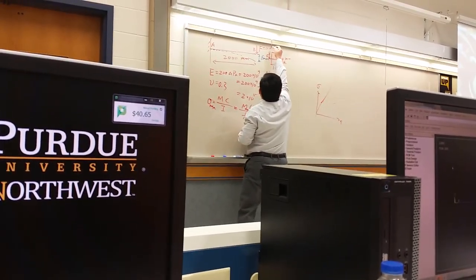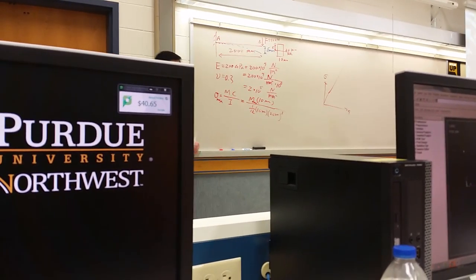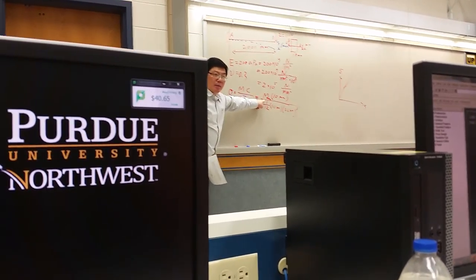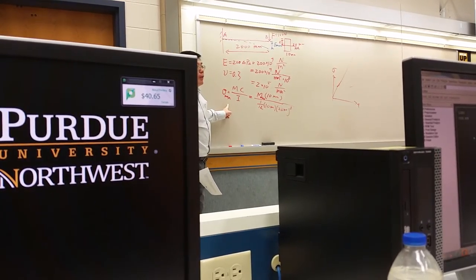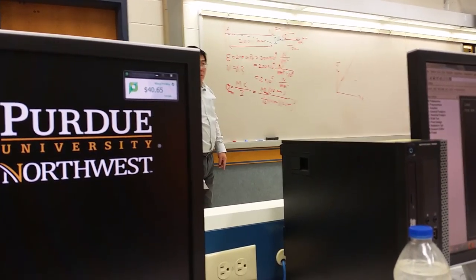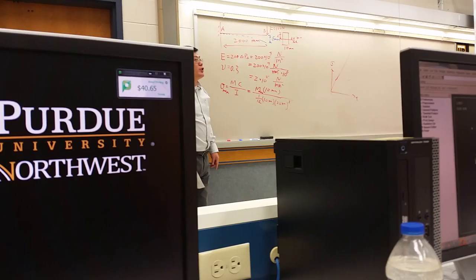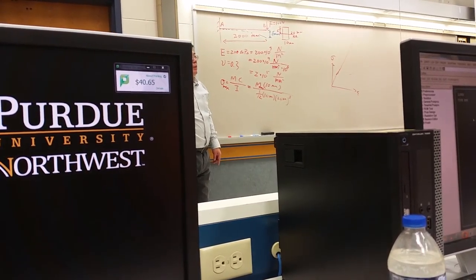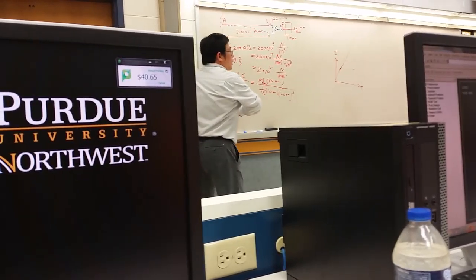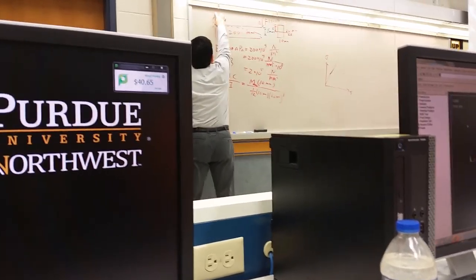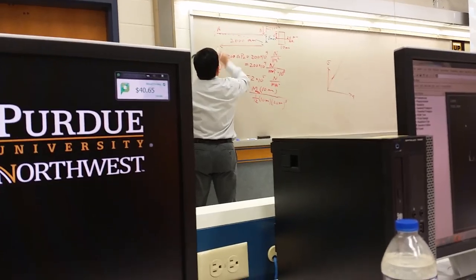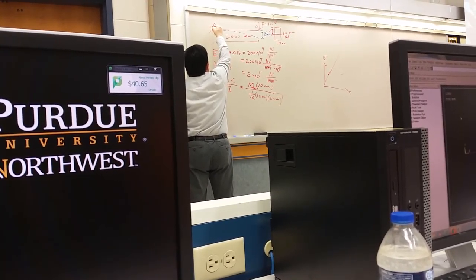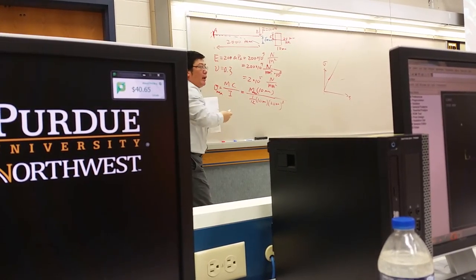So bending moment reaches maximum at the fixed end. Use that maximum bending moment to calculate the maximum normal stress. Along which direction? This normal stress along which direction? You have a cross section here. Here's the cross section. You have bending moment. You have bending moment. And point A.